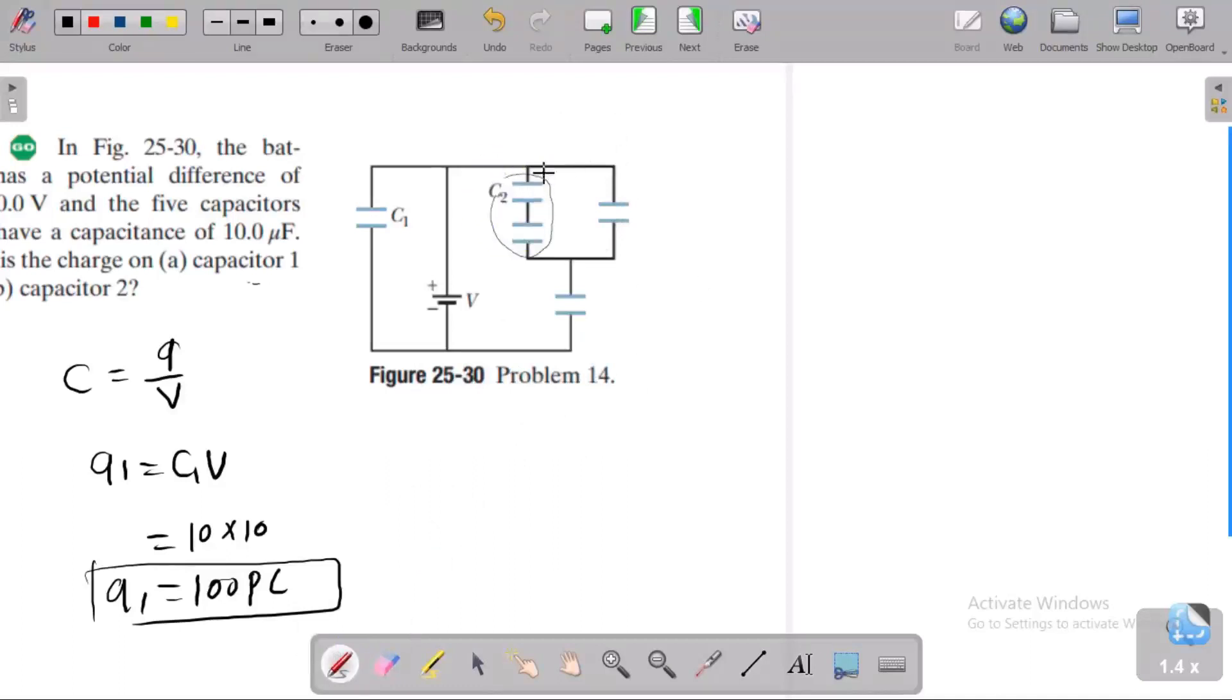I will redraw the circuit with C2, C4, and C5. C2 and C3 form a series combination. This is C4, and we have C5. Now, what is the value of C2, C3?